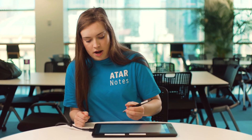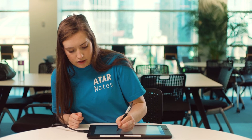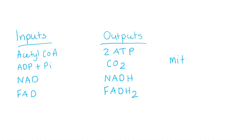Just a reminder that this is occurring in the mitochondrial matrix. Another important thing to remember is that those energy carrier molecules that have been formed — so the NADH and the FADH2 — then become important in the next stage of aerobic respiration, which is the electron transport chain.